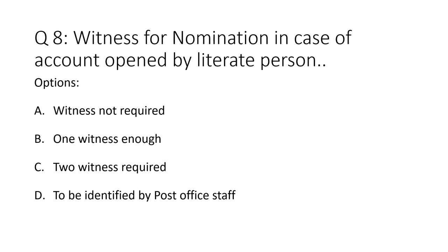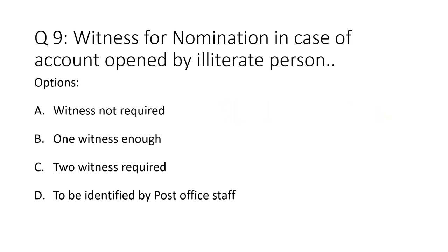Question 9: Witness for nomination in case of account opened by an illiterate person. Option A: witness not required. Option B: 1 witness enough. Option C: 2 witnesses required. Option D: to be identified by postal staff. The correct answer is Option C — 2 witnesses required.